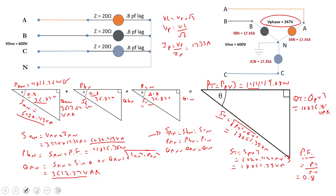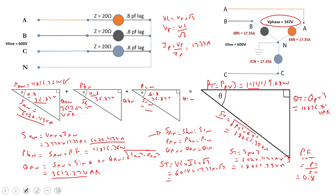I can add up all apparent power values at their angles to get the total apparent power. Now I'm going to introduce a new formula: S total equals V_line times I_line times root 3. Plugging in the values — 601 volts times 17.35 amps times root 3 — gives 18,061.35 VA. Same value. So we've got a second formula that works here.